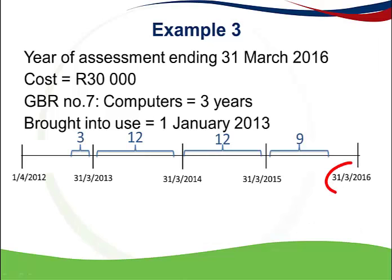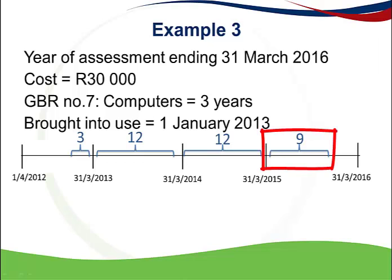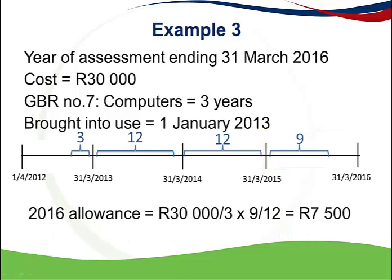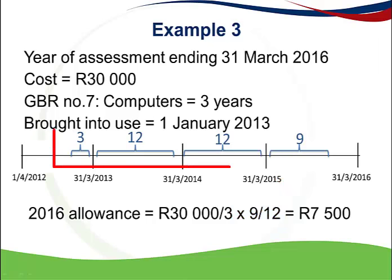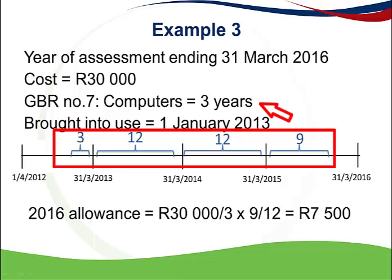When calculating the 2016 year of assessment allowance, only 9 months of the 3-year write-off period remain. Although the asset was used for the full year, only 9 months can be claimed. The 2016 allowance is therefore apportioned at 9 over 12 months. If you add up all the periods — 3 months, 12 months, 12 months, and 9 months — it equals exactly 3 years, which is the total period over which the asset can be claimed.